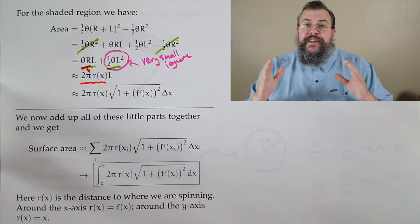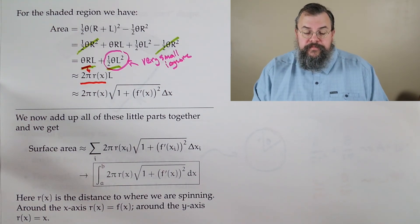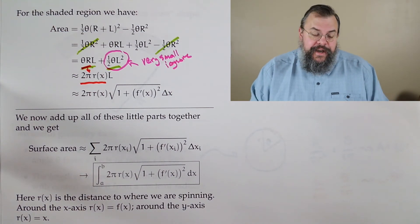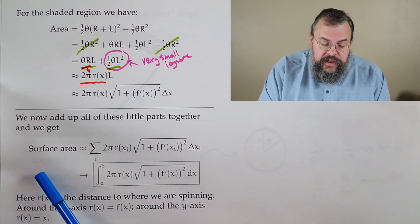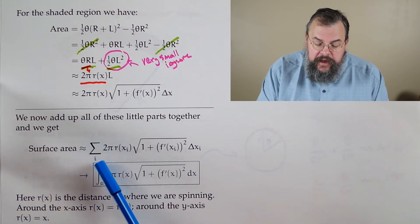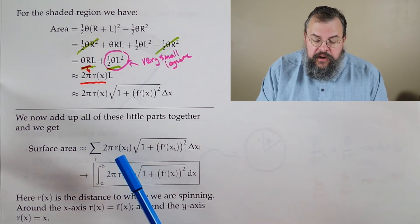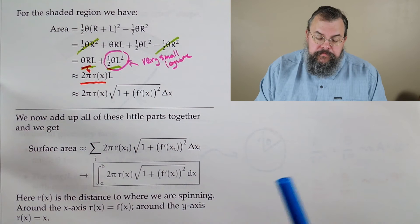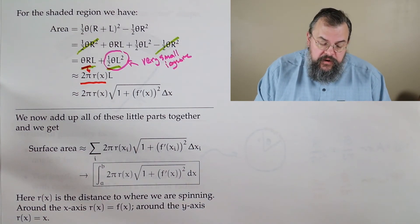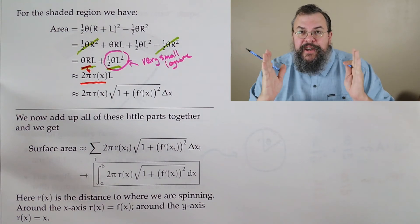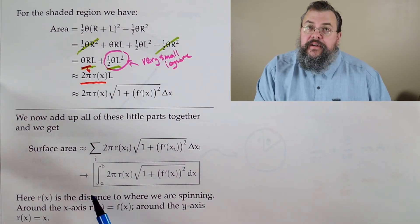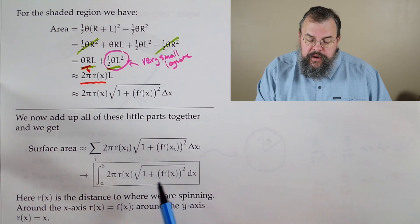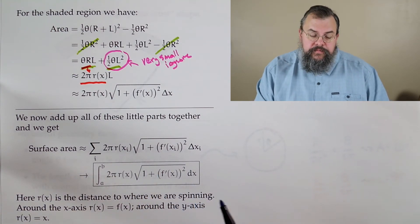It's a good approximation when l is very small. We add them all up — that's what integrals do. The surface area is approximately the sum of 2π·r(x)·√(1 + f′(x)²)·Δx. Taking the limit as things get smaller, the sum becomes an integral: Surface Area = ∫ 2π·r(x)·√(1 + f′(x)²) dx.